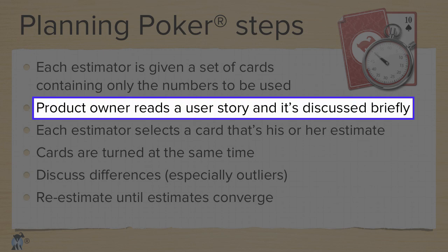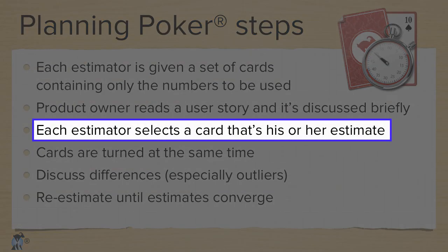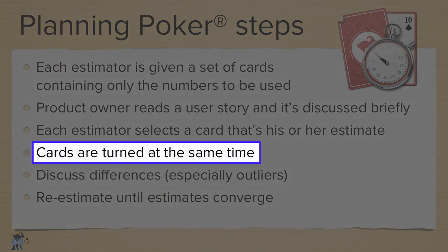This discussion can be as short as a few seconds, but it can take as long as needed. Once each team member has decided upon an estimate, they pull that card out of their hand, holding it so no one else can see it. When everyone has picked an estimate, the cards are revealed all at the same time.